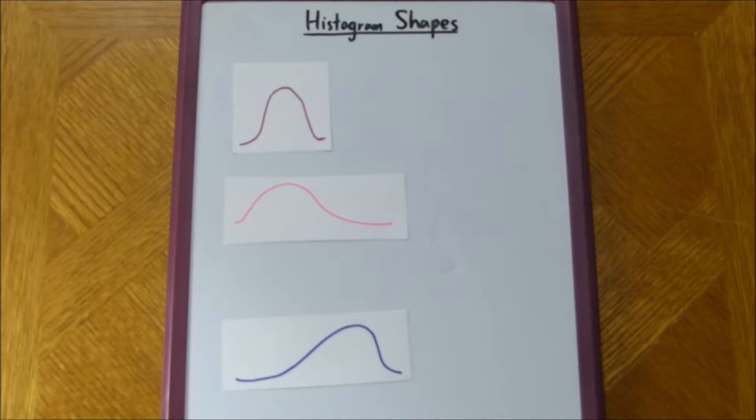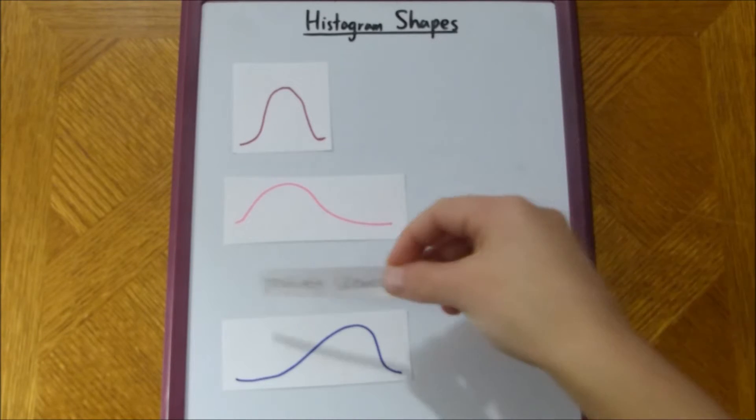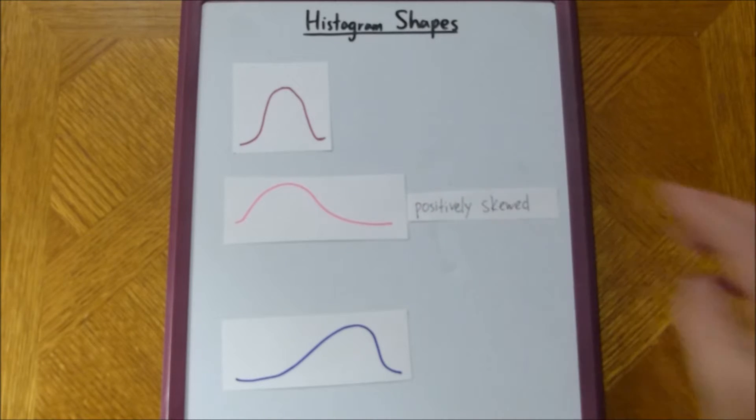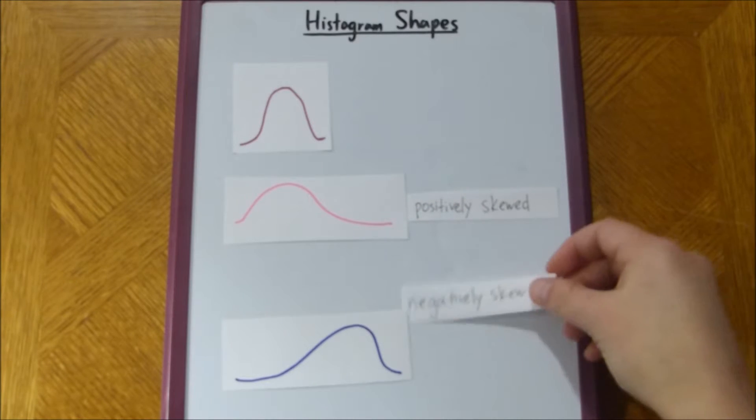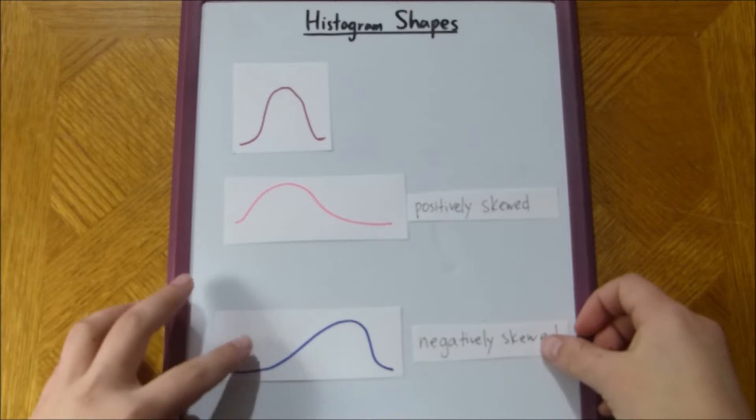And we would call this one positively skewed, I'll put that right there. And we would call this graph negatively skewed.